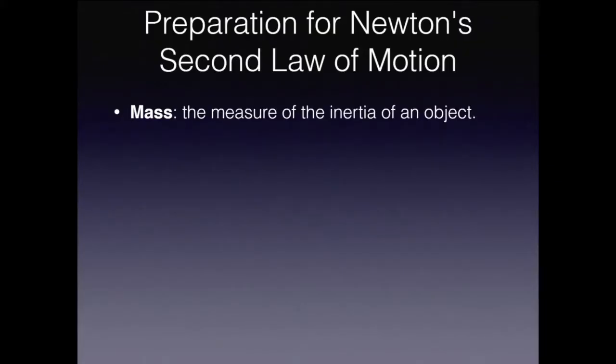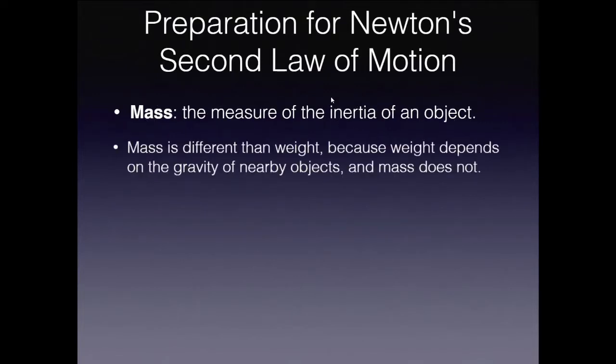So to prepare for his second law of motion, I really need to define mass. Mass is really the measure of the inertia of an object in physics. So how much an object has resistance to acceleration is a measure of its mass. So you've got to understand, a lot of people mix this up. They think mass and weight are the same thing, and they're not. Weight is different than mass, because weight depends on the gravity of nearby objects, and mass does not.